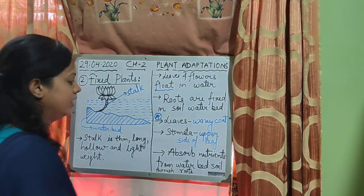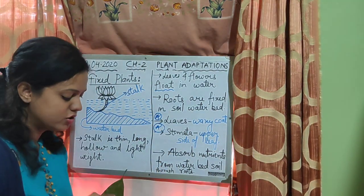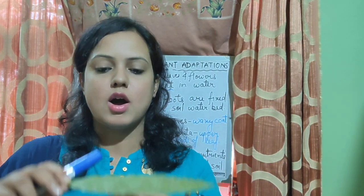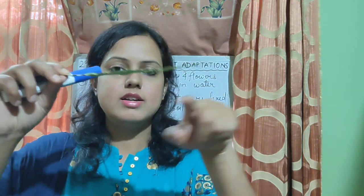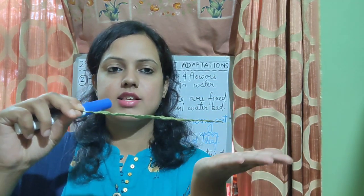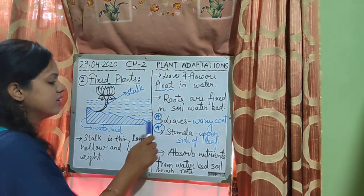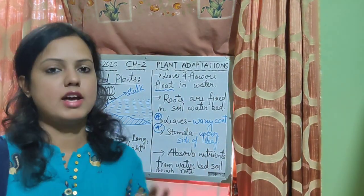Second adaptation: stomata. In the first chapter, we learned that stomata are mostly found on the underside of the leaf. But in fixed plants, the stomata are found on the upper surface of the leaf. Why?